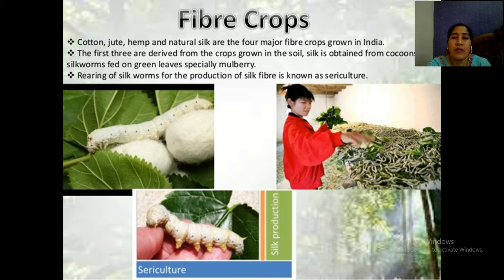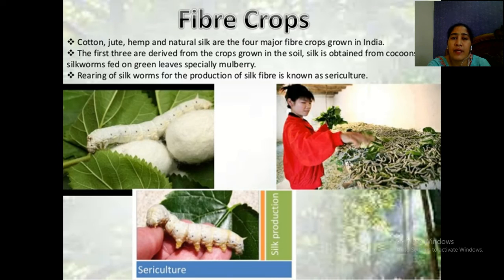There are four main fiber crops: cotton, jute, hemp, and natural silk. Cotton, jute, and hemp are derived directly from crops grown in the soil. Silk, however, is obtained from cocoons of silkworms.